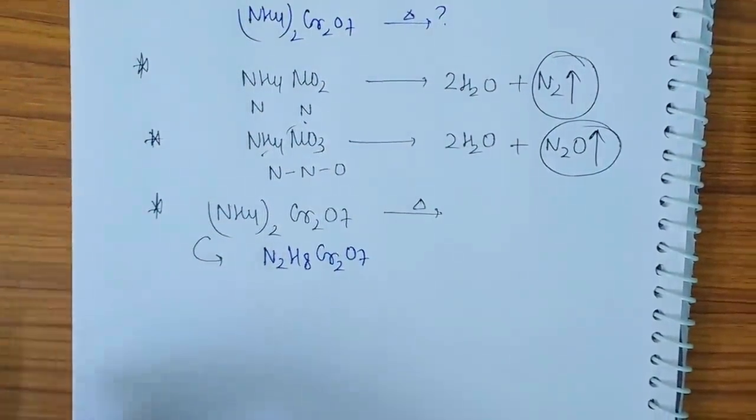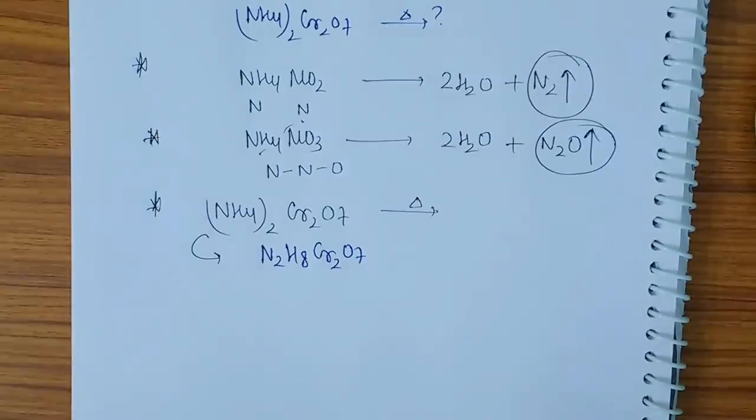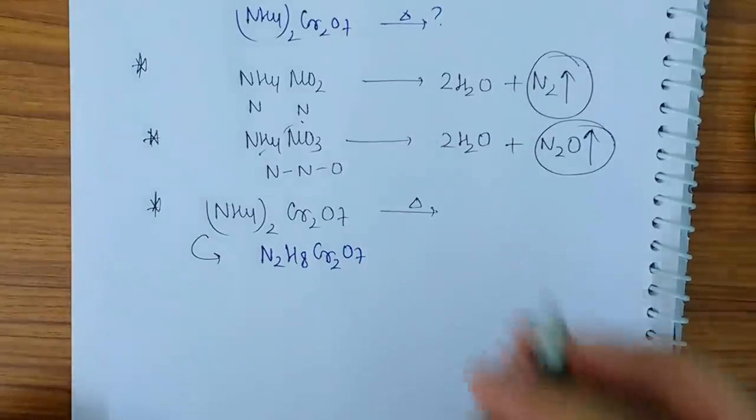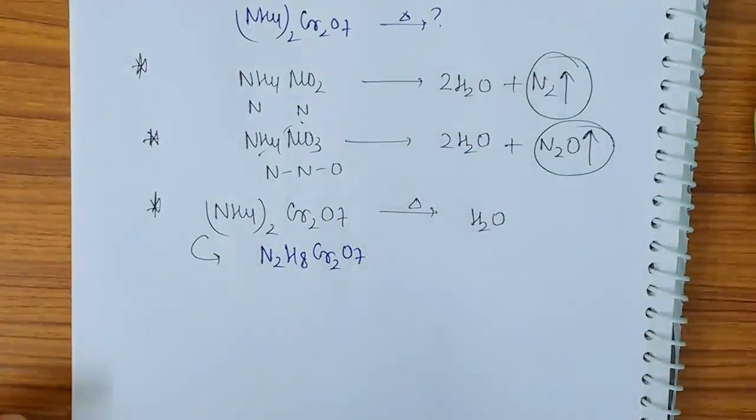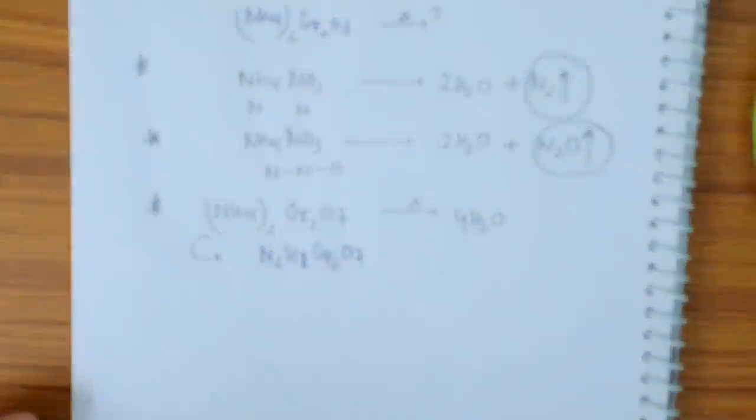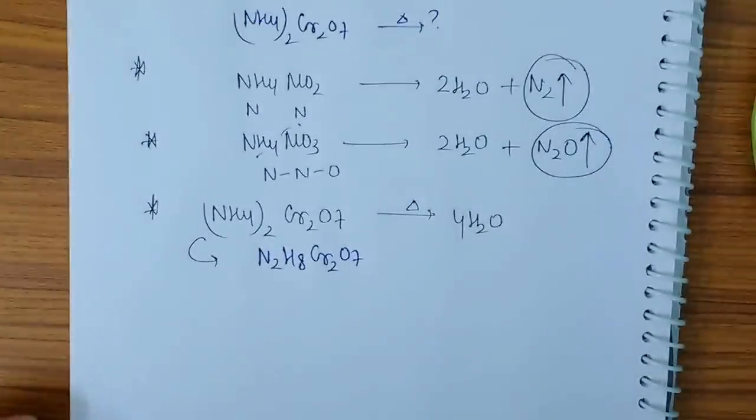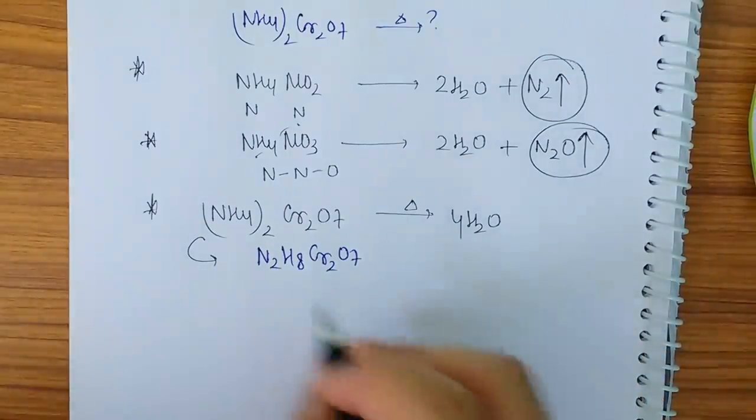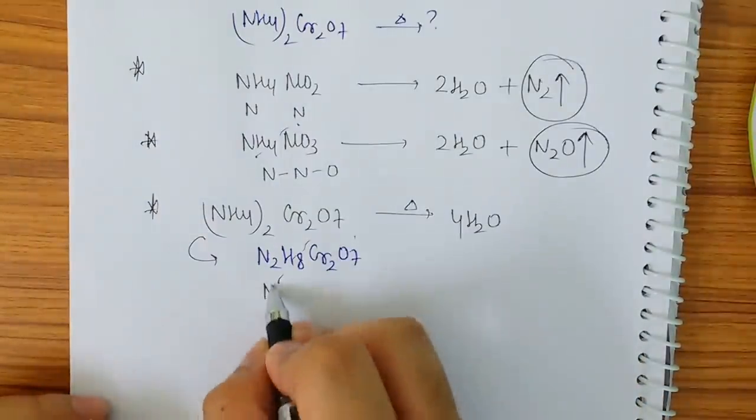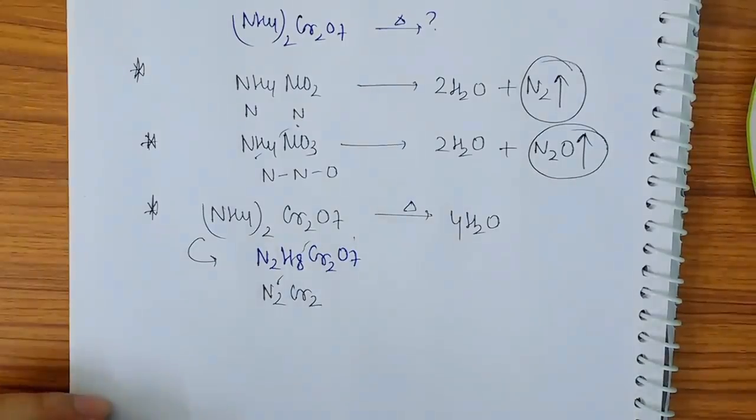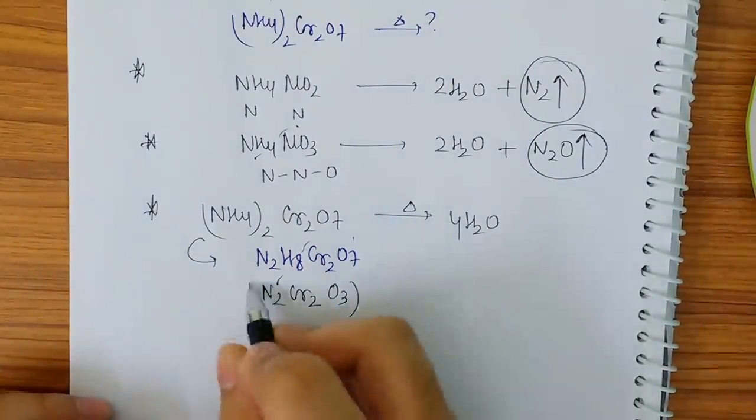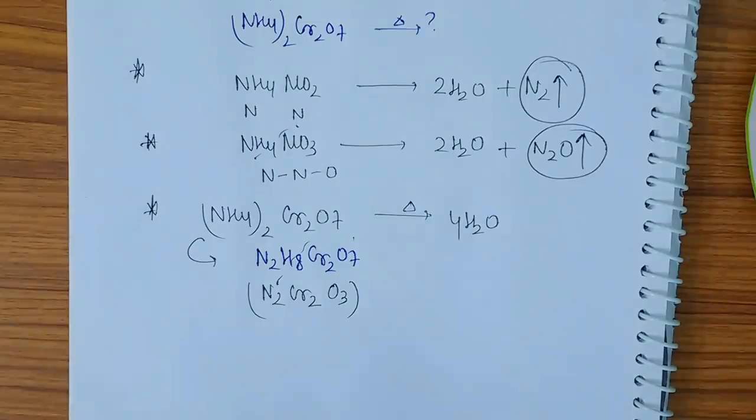See, I have to remove the water molecules first of all. So how many water molecules maximum can be removed? You have to see first. I can remove 4H2O to the maximum amount. So if I remove 4H2O, then N2Cr2O3 I am getting, on removing 4H2O.